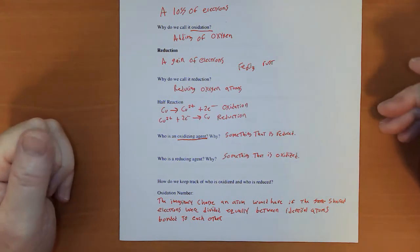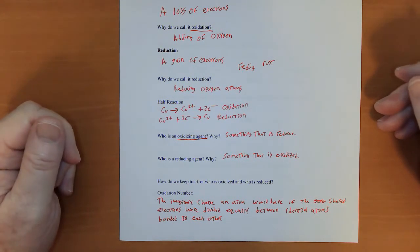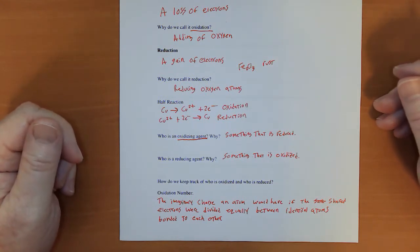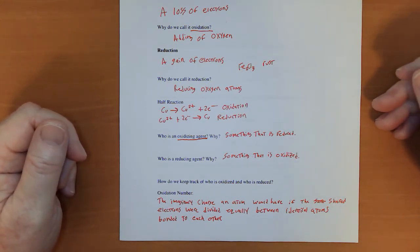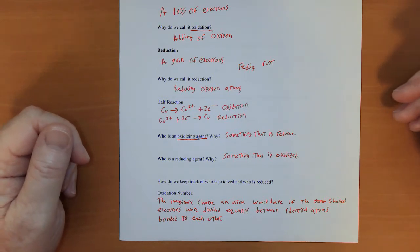So what is oxidation number? Don't tell anybody I said this, but just think of it as charge. Now one of the problems with thinking of it as charge is that we're going to be using it with covalent compounds, which aren't charged. Now important point, really important point, oxidation numbers are assigned to atoms, individual atoms. They are not assigned to overall compounds. So each atom in the compound has its own oxidation number.